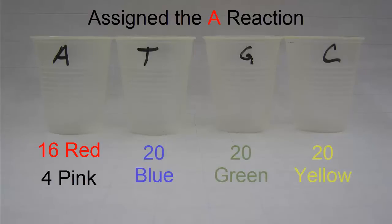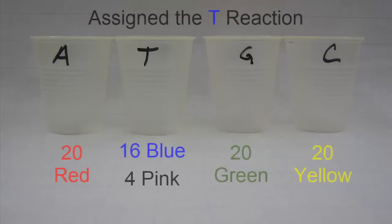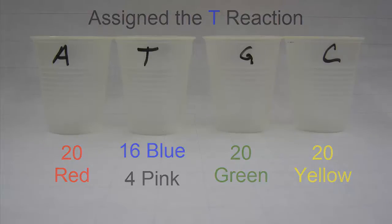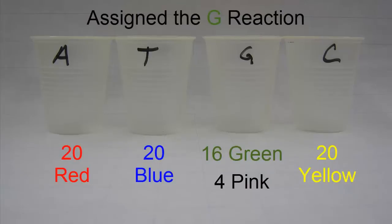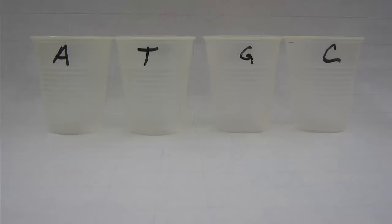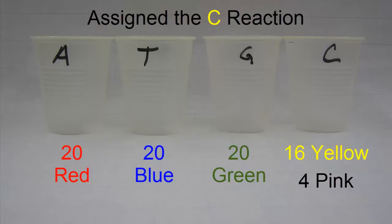All your other cups get 20 normal nucleotides of the right color. So for the A reaction, the T, G, and C cups would get 20 paper clips of the appropriate color. Similar setups apply if you were assigned the T, G, or C reaction — your cups would be filled accordingly.